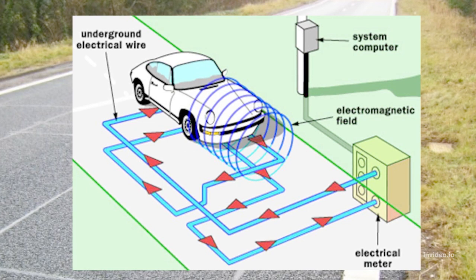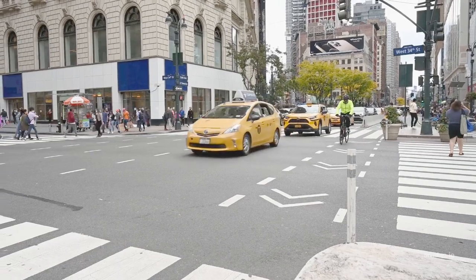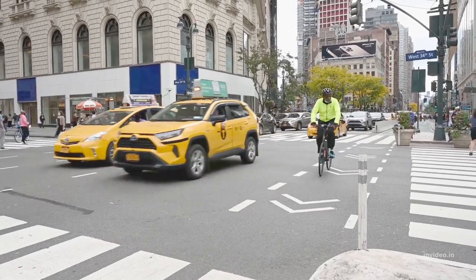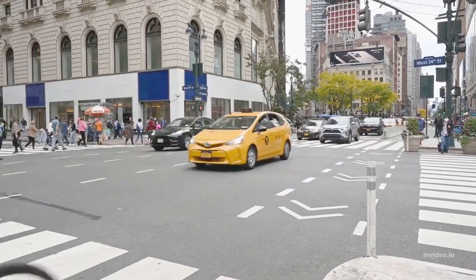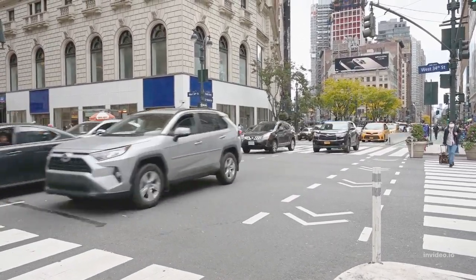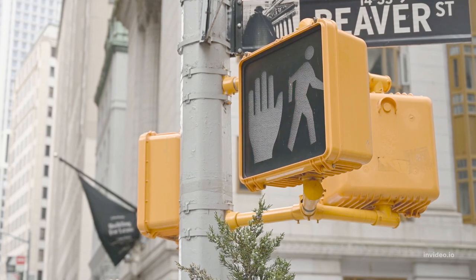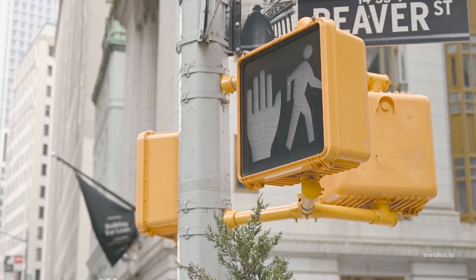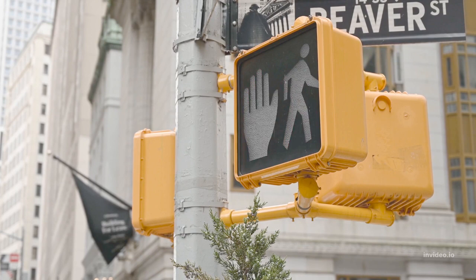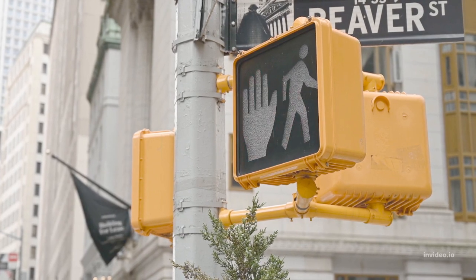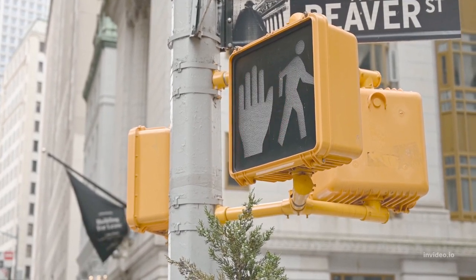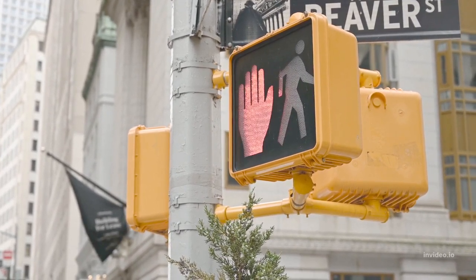This is the most common trigger mechanism, but it's not the only one in use. Some areas have had success with radar, laser, or air tube sensors. One emerging trigger mechanism is the video loop. In this system, a computer analyzes a video feed from the intersection.